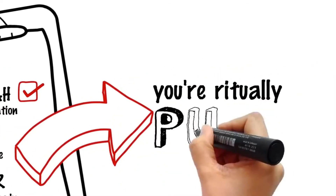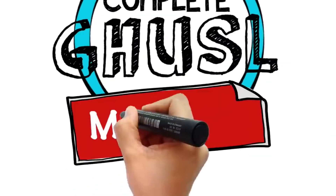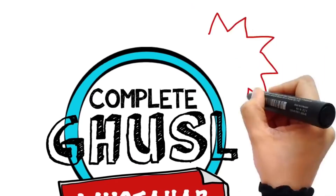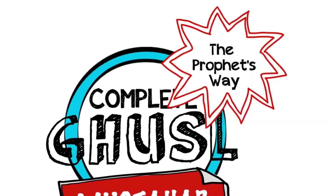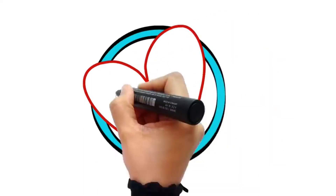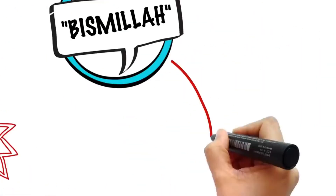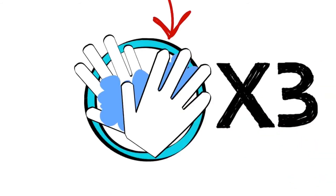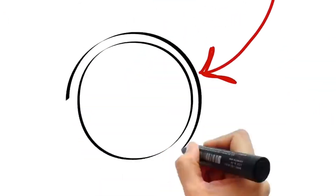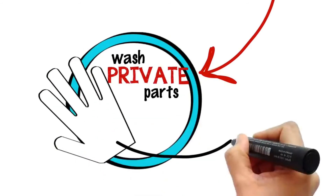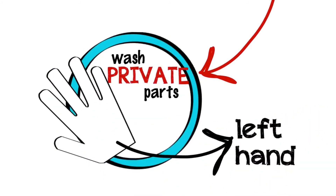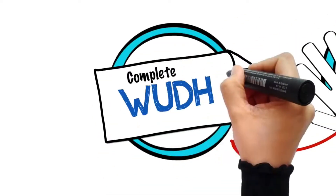As for the complete Ghosli - this is the Mustahabb one, the way the Prophet took a bath - here is how you do it. Begin with an intention to purify yourself from the major impurity, then say Bismillah. Wash your hands three times, then with your left hand wash your private parts and anywhere else that is contaminated with traces of impurity.